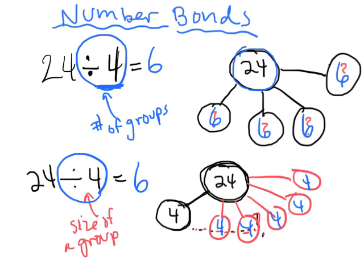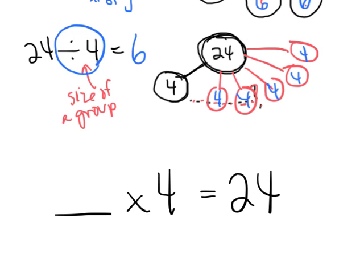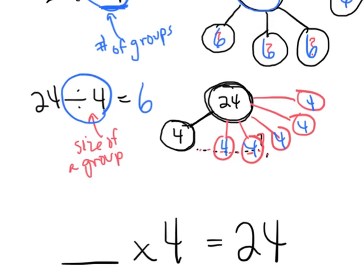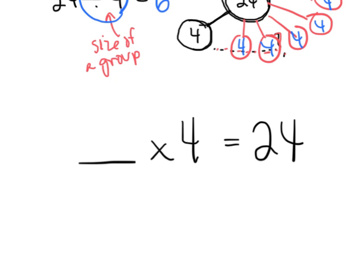In both cases, we could have modeled it as: what times 4 equals 24? That's another way we could think of this problem. So you can see we're modeling division two different ways, plus we're relating it to multiplication — and that's really what this lesson is all about.